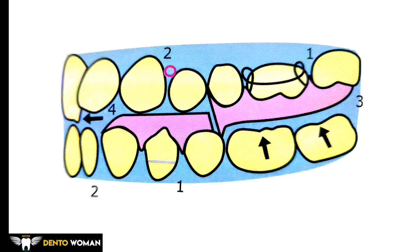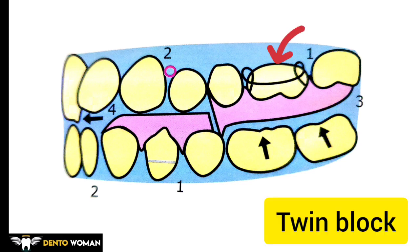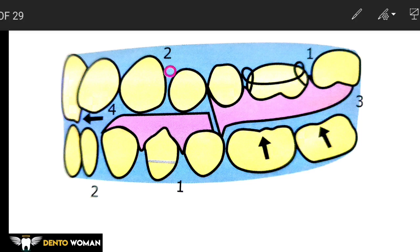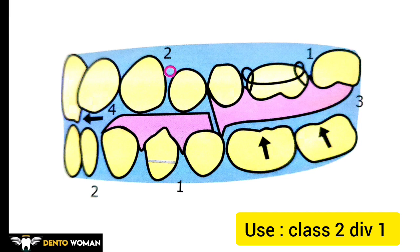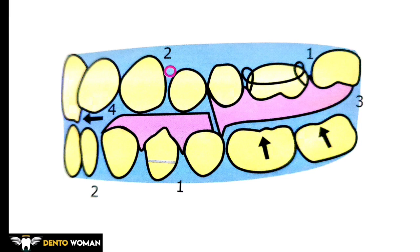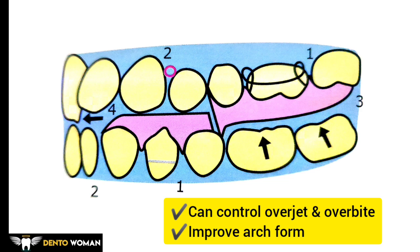Here is the line diagram of the twin block, where you can appreciate the delta clasp, ball clasp, upper block, and lower block. The primary indication for twin blocks in early mixed dentition is class 2 div 1. They can reduce overjet and correct distal occlusion, control overbite whether deep or in anterior open bite cases, and improve arch form by transverse or sagittal development.